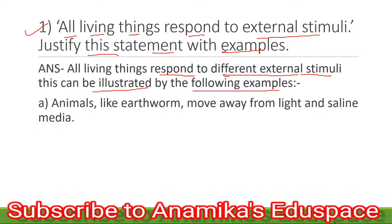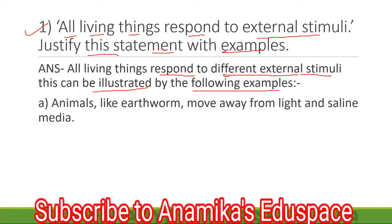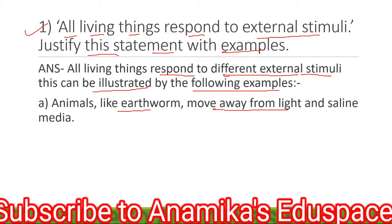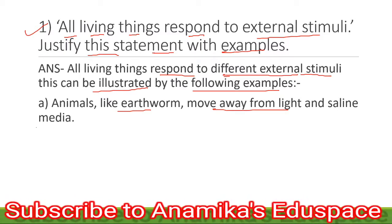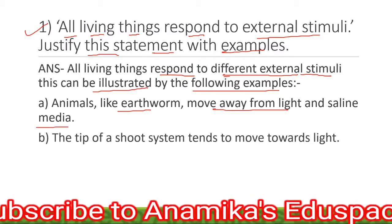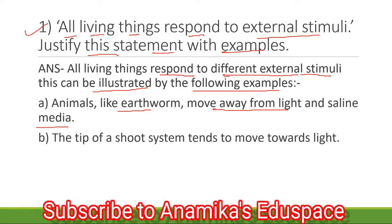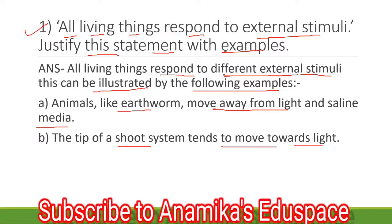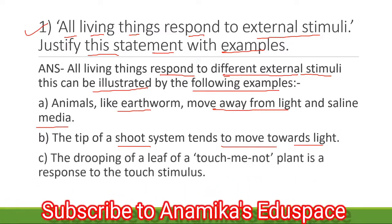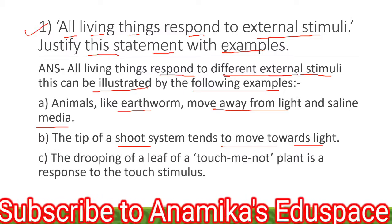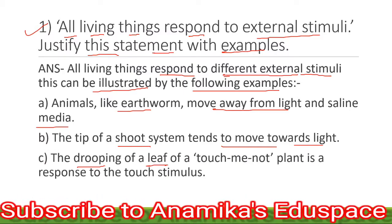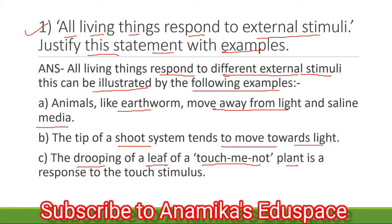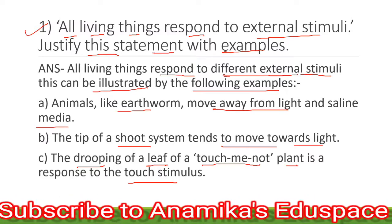Number 1: Animals like earthworm move away from the light and saline media. Number 2: The tip of a shoot system tends to move towards the light. Number 3: The drooping of a leaf of the touch-me-not plant is a response to the touch stimulus.